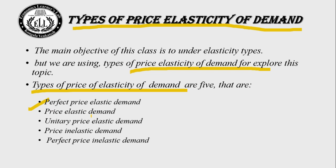The five types of price elasticity of demand are: perfect price elastic demand, price elastic demand, unitary price elastic demand, price inelastic demand, and perfect price inelastic demand. Perfect price elastic means a 1% change in price leads to an infinite change in quantity demanded. Price elastic means a 1% price change leads to a greater than 1% change in quantity demanded. Unitary price elastic means the price change and quantity demand change are equal. Price inelastic means a 1% price increase causes a less than 1% change in quantity demanded. Perfect price inelastic means a 1% price change causes no change in quantity demanded at all.